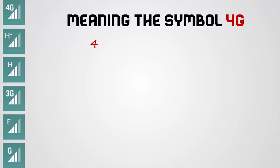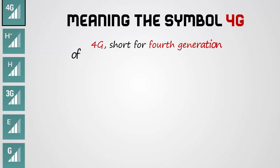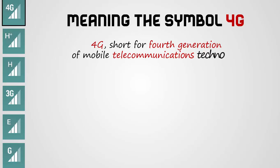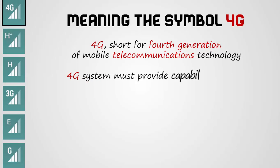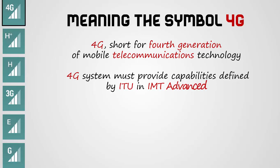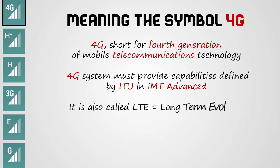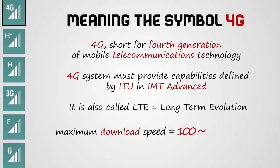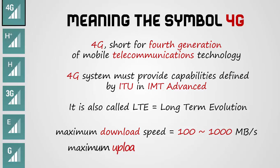Meaning of the symbol 4G: 4G is short for fourth generation of mobile telecommunications technology. 4G systems must provide capabilities defined by ITU-Advanced, also called LTE, which stands for Long-Term Evolution. Maximum download speed equals 100 to 1000 megabytes per second.